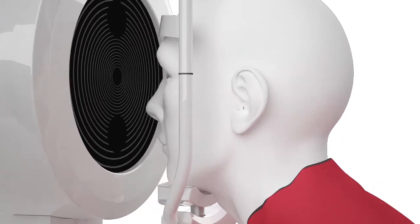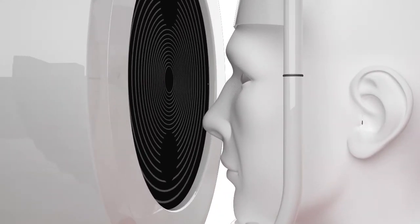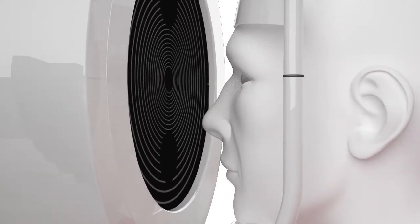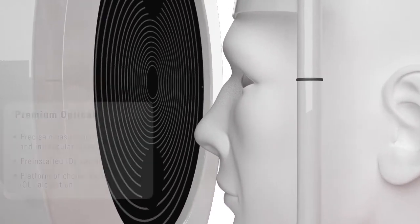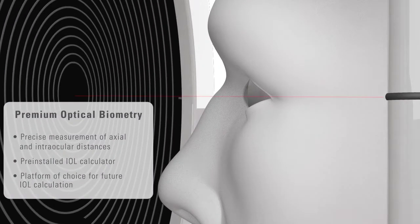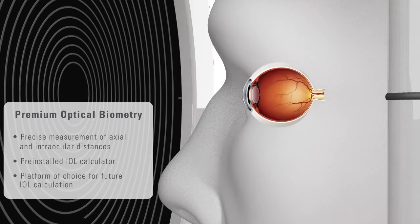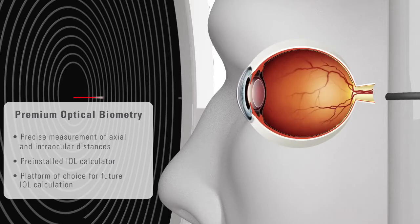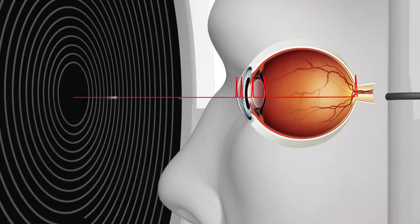The Galilei G6 Lens Professional offers a complete data set and platform for IOL calculation and selection, featuring dual Scheimflug and Placido data combined with a precise measurement of axial and intraocular distances.